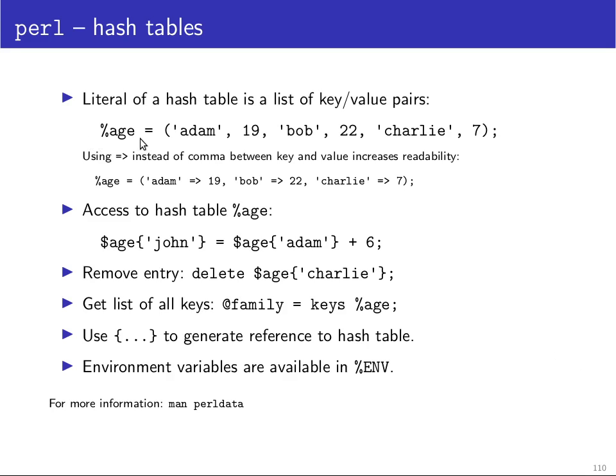And finally, hash table. You can initialize a hash table by just assigning to a hash table variable an array and then this will be interpreted as key value, key value, key value. There is an alternative syntax which is really just a synonym for the comma here. You can use the greater than, less than sign which looks a little bit like an arrow that maps one thing to another thing. It will also just result in exactly the same list, but here you can see a little bit more clearly that this key is mapped to this number, this key is mapped to this number, this key is mapped to this number.